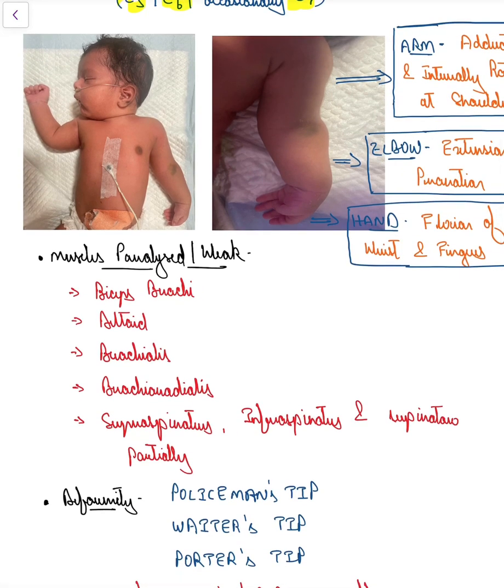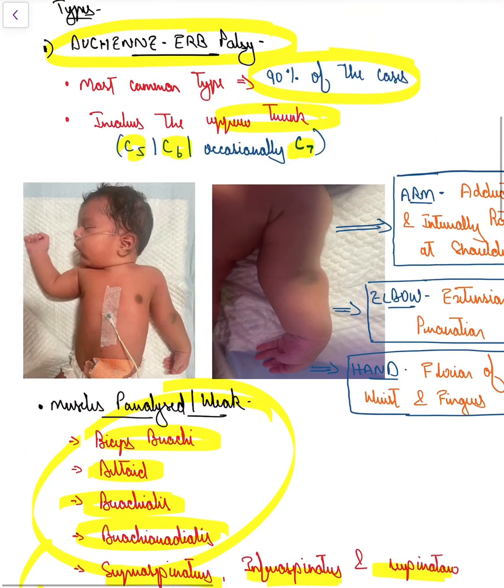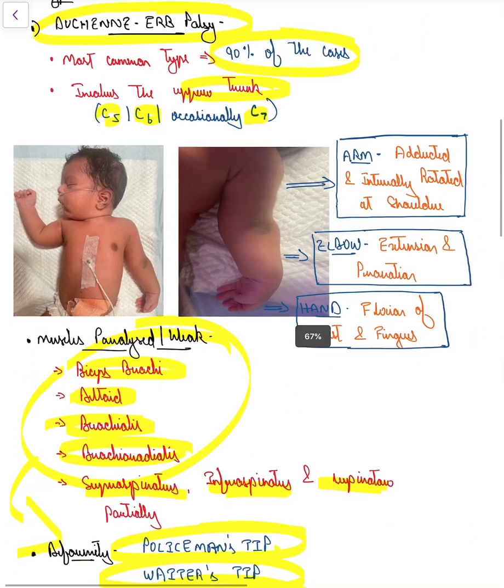These muscles will be weak or paralyzed: biceps brachii, deltoid, brachialis, brachioradialis, supraspinatus, infraspinatus, and supinator partially. When these muscles are paralyzed, the deformity is what we call policeman's tip hand, waiter's tip hand, or porter's tip hand, which we find in Erb's palsy.